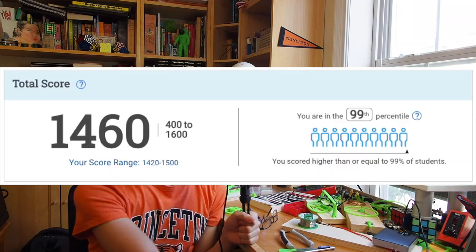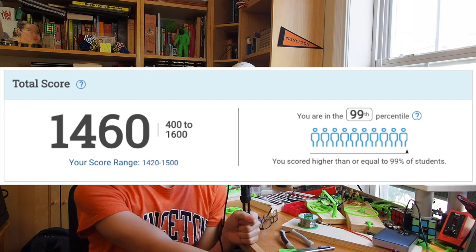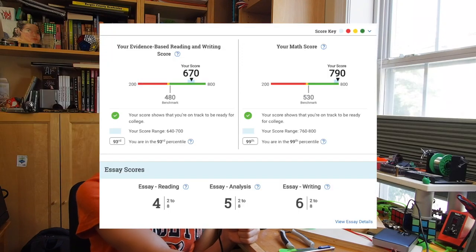As far as test scores go, I took both the SAT and ACT but decided to only report my ACT scores because they were ultimately better. In March 2018, I took the SAT and got a 1460—670 on reading and writing, 790 on math—and on the essay I got a 15 out of 24.